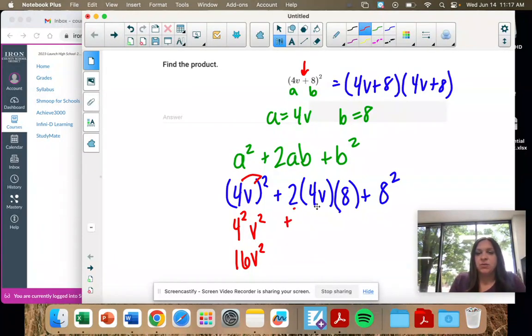And then here we have 2 times 4 times 8, and then we'll multiply that by V. So 2 times 4 is 8, 8 times 8 is 64. And then 8 squared is 64. We just did that.